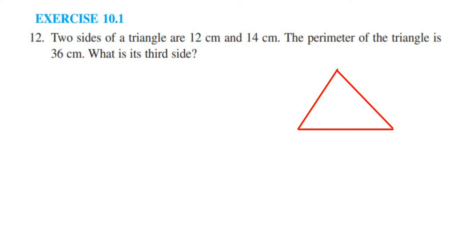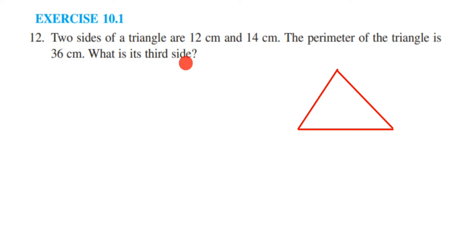Here is a question from Exercise 10.1 — this is the 12th question and the chapter is Mensuration of Class 6. The question is: two sides of a triangle are 12 centimeters and 14 centimeters, the perimeter of the triangle is 36 centimeters. What is its third side? They have given two sides — 12 cm and 14 cm — and the perimeter is 36 cm. We have to find the third side.